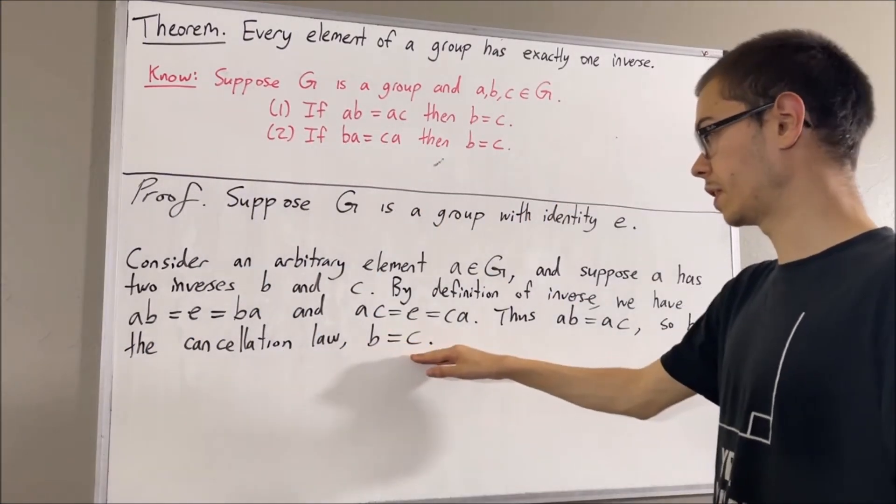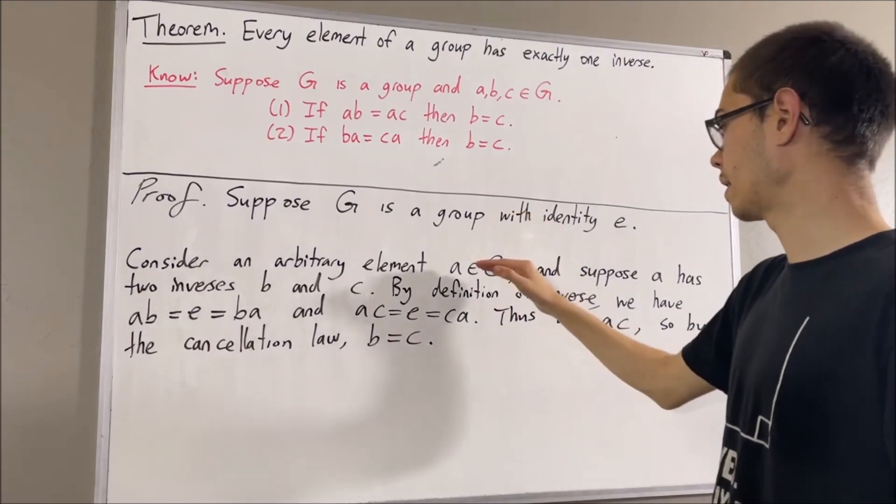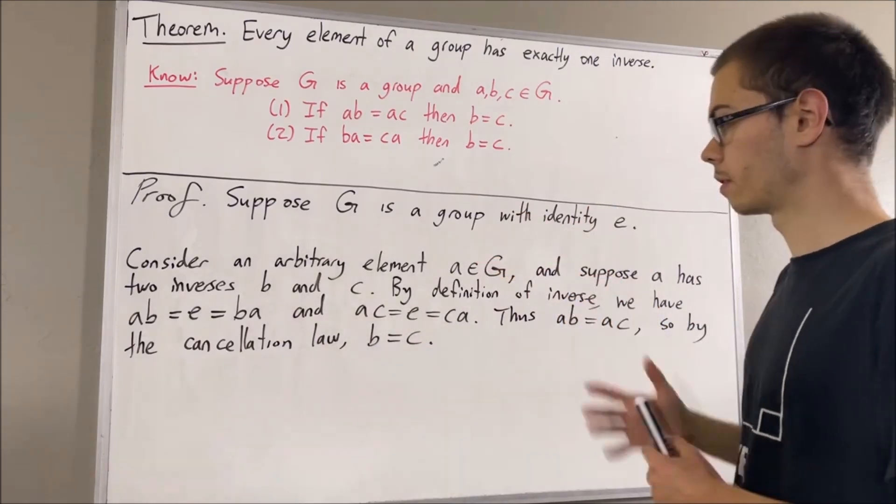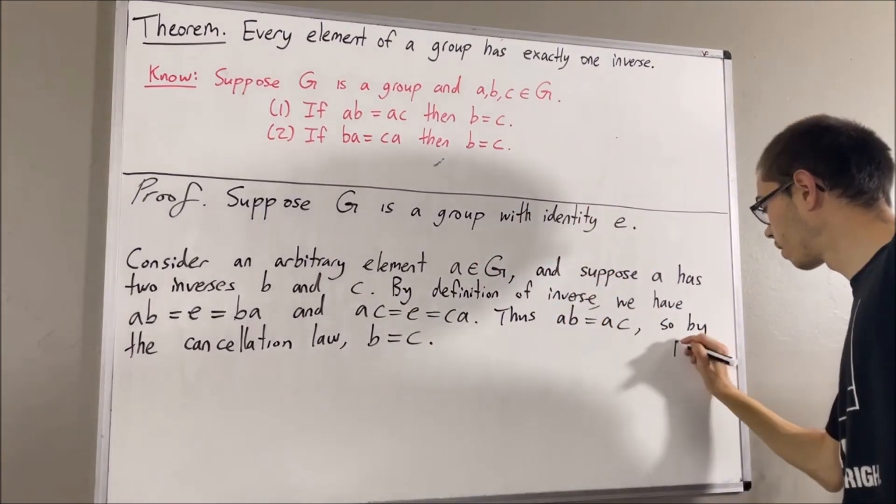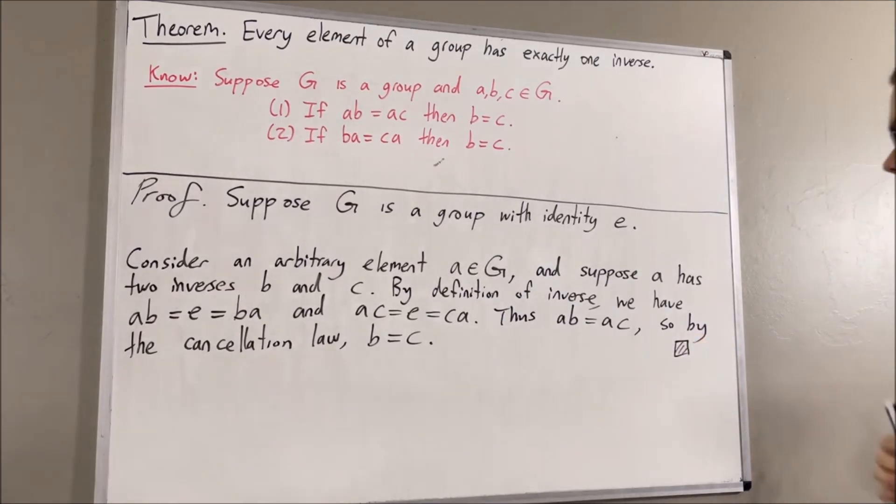And so we've shown that b equals c, which means that a has exactly one inverse. This completes the proof. And yeah, that's pretty much it for this video.